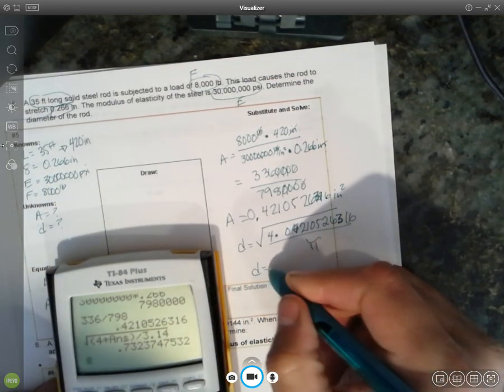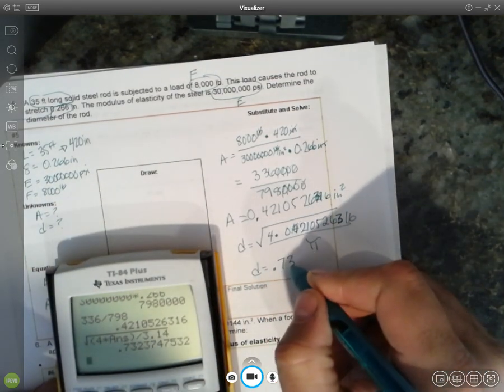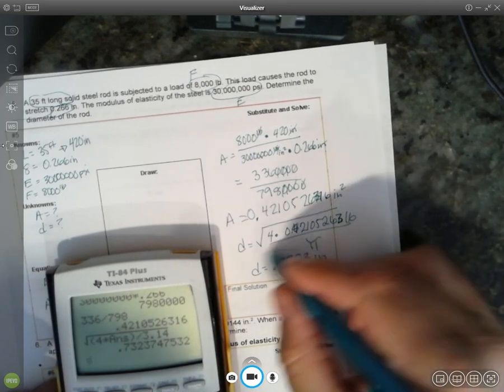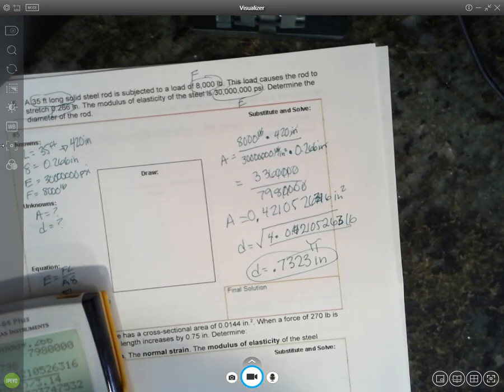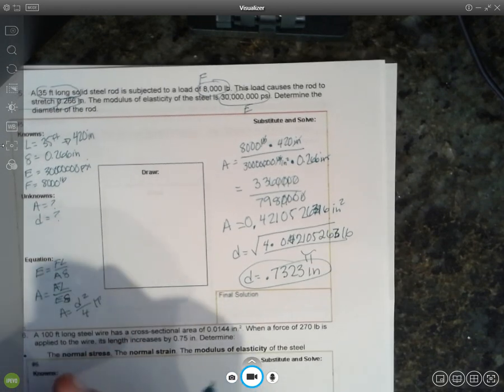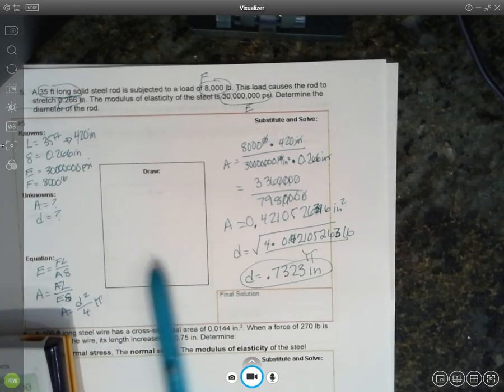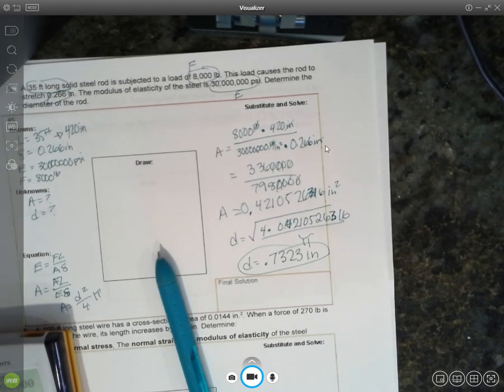And that tells me my diameter would have to be 0.7323 inches. All right. Pretty thick diameter on that rod, huh? Almost an inch thick. 8,000 pounds though, that's kind of a lot, right? Hopefully I didn't make a mistake here. 4 times the area divided by pi and square root. Well, I think we're good. So, there you go. 0.732 inches.